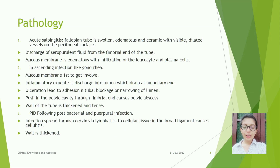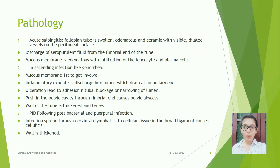Pathology: acute salpingitis. The fallopian tubes are swollen, edematous, and congested with visible dilated vessels on the peritoneal surface. Discharge of seropurulent fluid from the fimbriated end of the tube. The mucous membrane is edematous with infiltration of leukocytes and plasma cells. In ascending infections like gonorrhea, the mucous membrane is the first to get involved. Inflammatory exudate is discharged into the lumen which drains at the ampullary end. Ulceration leads to adhesion and tubal blockage or narrowing of the lumen.